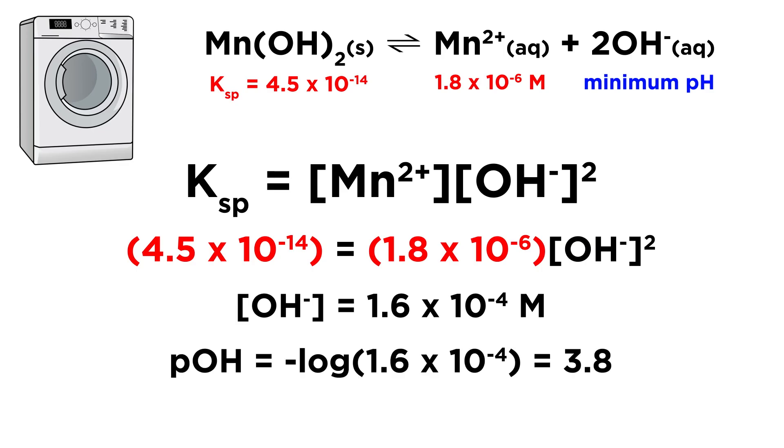From this, we take the negative log to get the pOH, and then subtract from 14 to get the pH, which will be 10.2. Therefore if there is enough base in the detergent to keep the pH above 10.2, the manganese ion concentration will remain below a threshold that would stain the clothes.